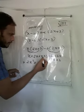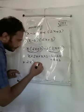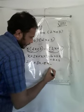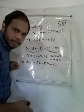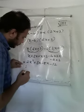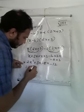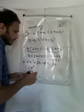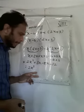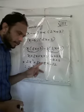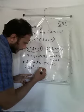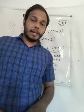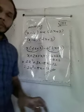So x into 2x gives 2x squared, plus x into 3 gives 3x, minus 4 into 2x gives 8x, minus 4 into 3 gives 12. That equals 2x squared, plus 3x minus 8x, which gives minus 5x.